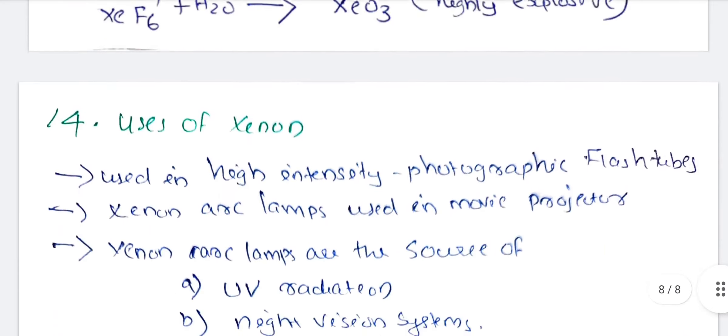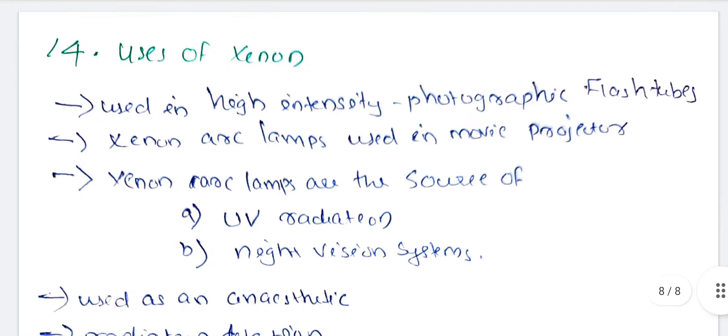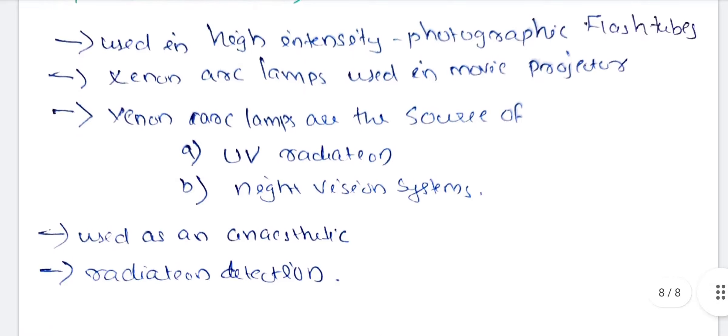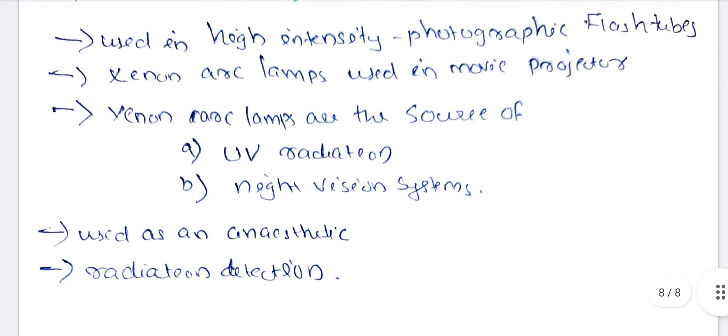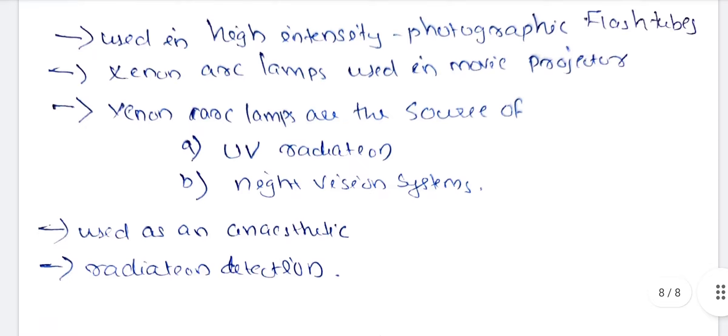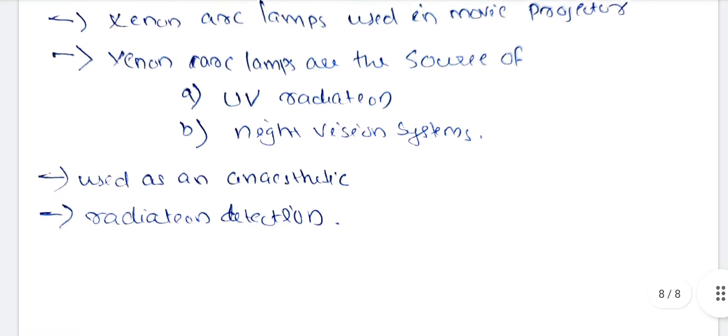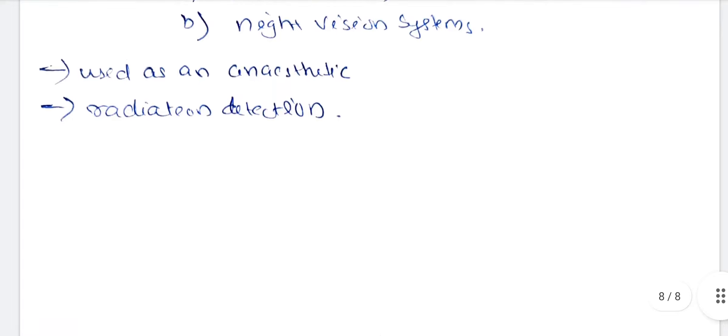Uses of Xenon: Xenon is used in high intensity photography flash tubes. Xenon arc lamps are used in movie projectors. Xenon arc lamps are the source of UV radiations available in night vision systems. Used as an anesthetic and in radiation detection.